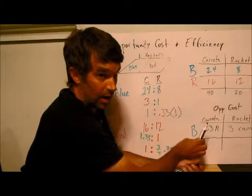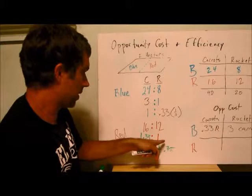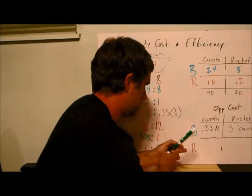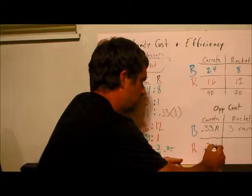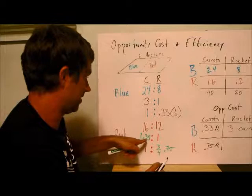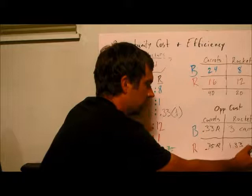So here, you see that the 3 is a lot bigger than the 0.33. Aha! Okay, now let's look at red. The opportunity cost of growing carrots is 0.75 rocket. And the opportunity cost of growing rocket is 1.33 carrots.